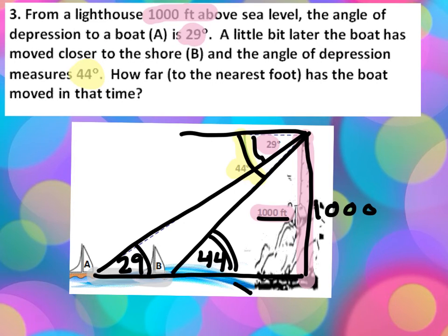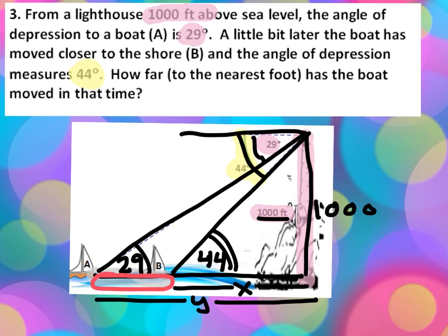Using the 44 degree, you could get X this distance. And using the larger triangle with a 29 degree angle, you could get Y. The difference of those two will give you this length right here. If you take the Y and subtract the X, you'll get your answer. We'll save that later, let's start with the X.